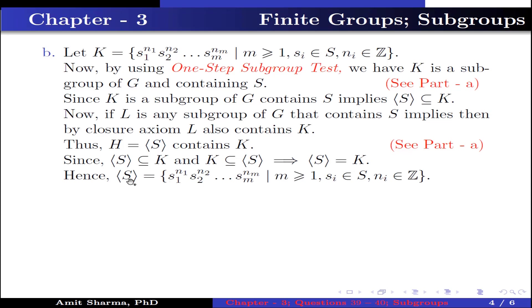Since the set generated by S is contained in K and K is contained in the set generated by S, this implies the set generated by S equals K. Hence, the set generated by S equals {s1^n1 · s2^n2 · ... · sm^nm}, where m ≥ 1, si belongs to S, and ni belongs to ℤ.